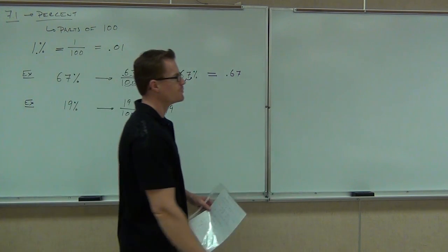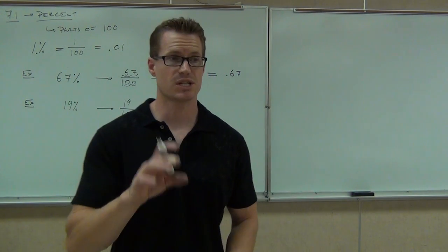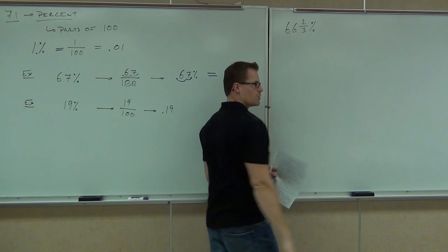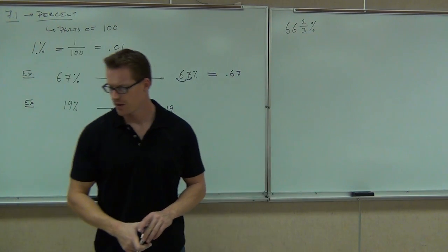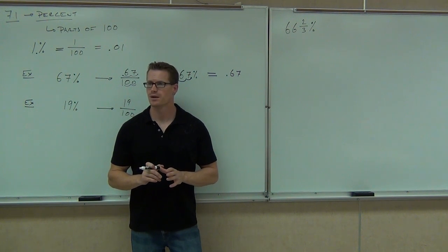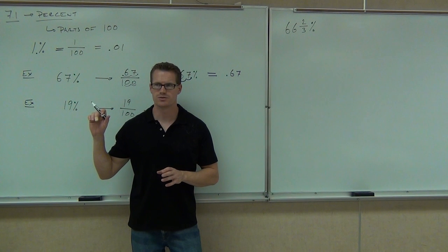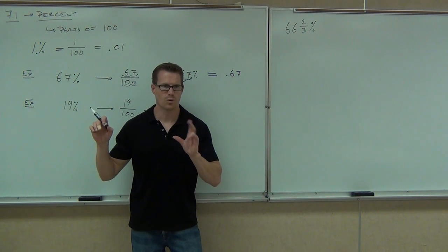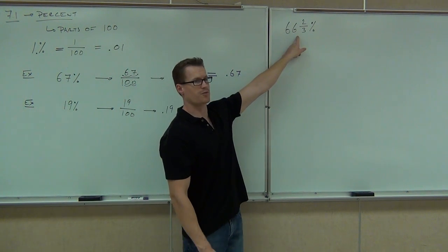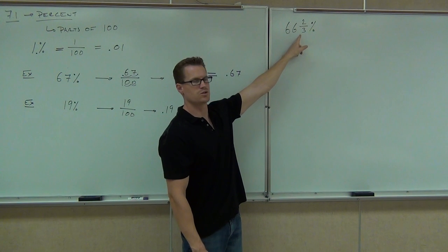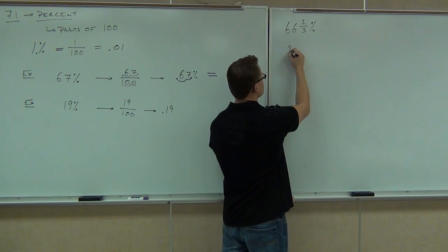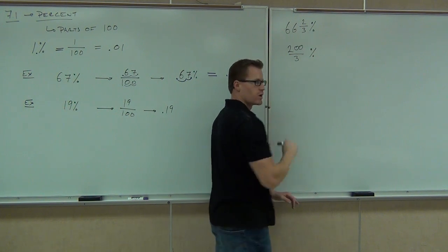What if you get a weird-looking percentage? Sometimes you'll see a percentage given as a fraction, like 66 and two-thirds percent. We can translate that to a fraction as long as we understand what percent really means. What's percent mean? Parts of 100. So 1% would be 1 over 100. Could you translate 66 and two-thirds into an improper fraction? Yes — it's going to be 200 over 3. So it would be 200 over 3 percent.